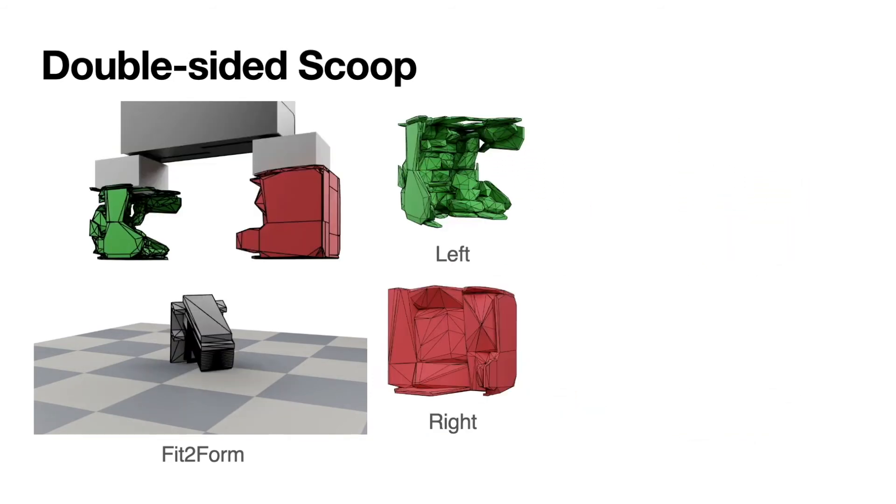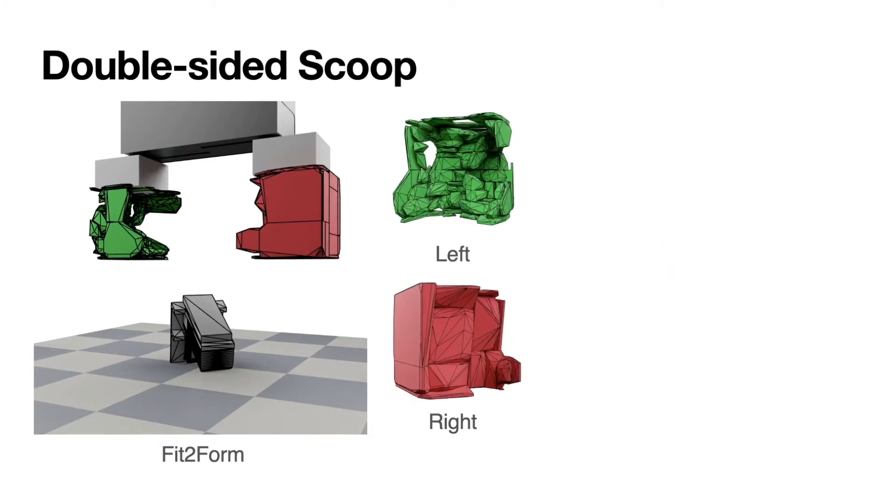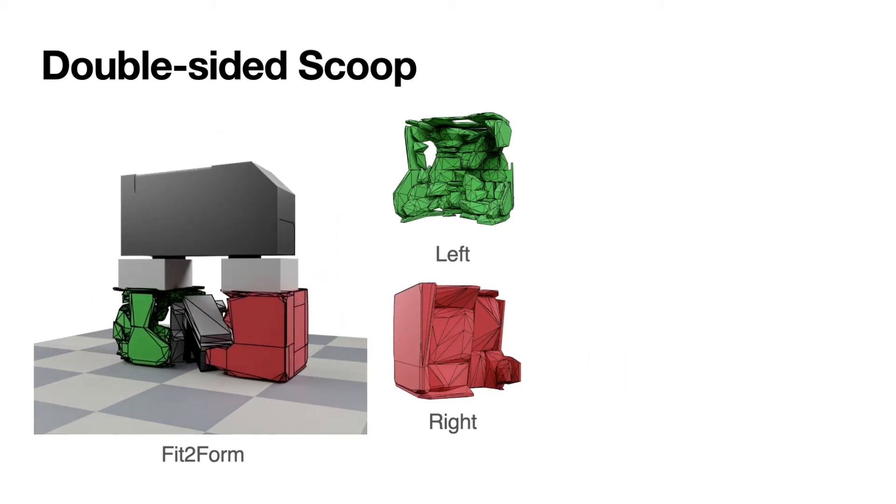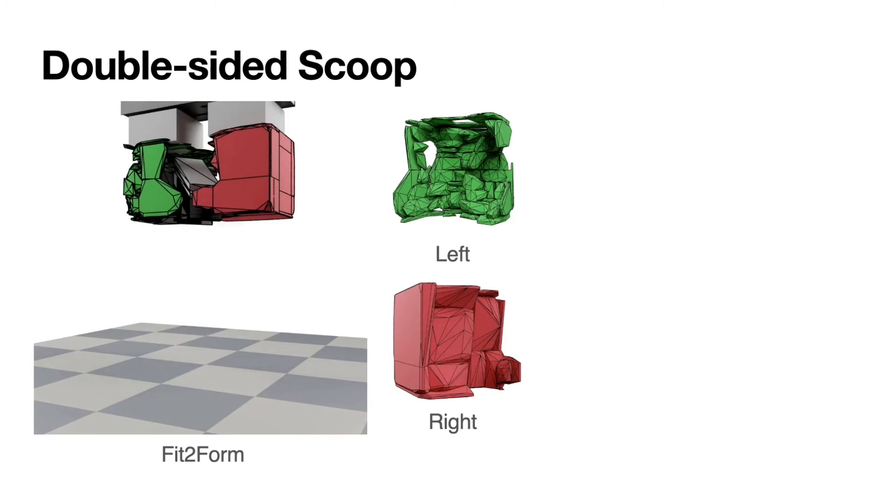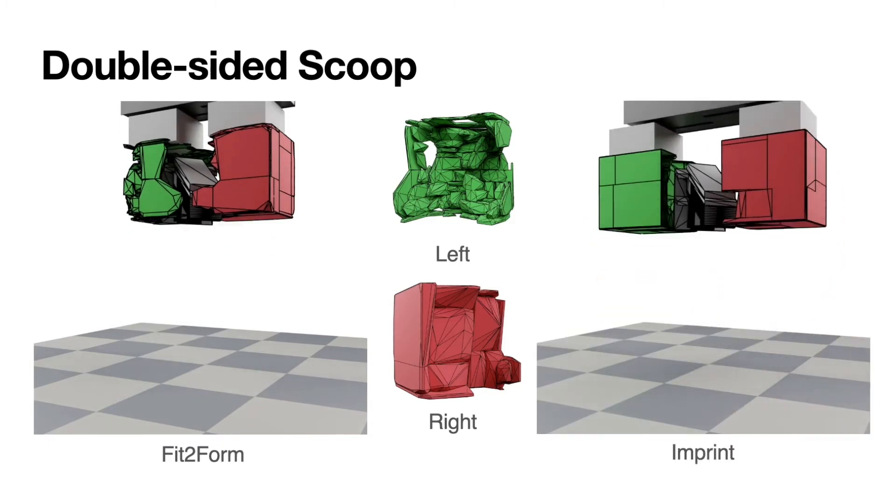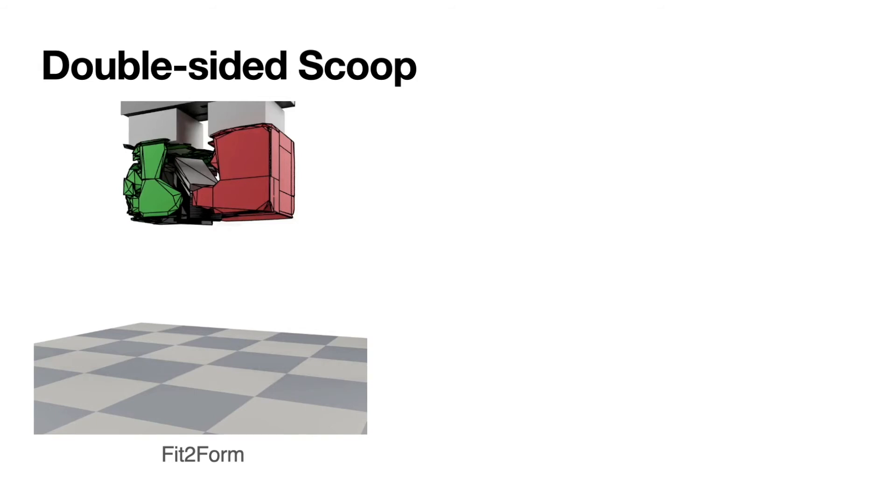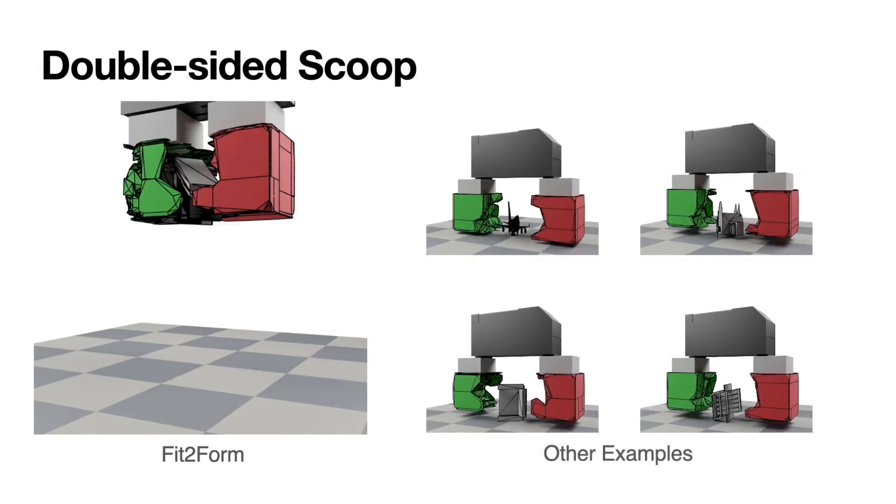The second strategy is double-sided scoop, where both fingers have a significant amount of empty space to cage larger objects and protruding structures for additional grasp stability. This is the corresponding imprint gripper. Here are more examples for double-sided scoop.